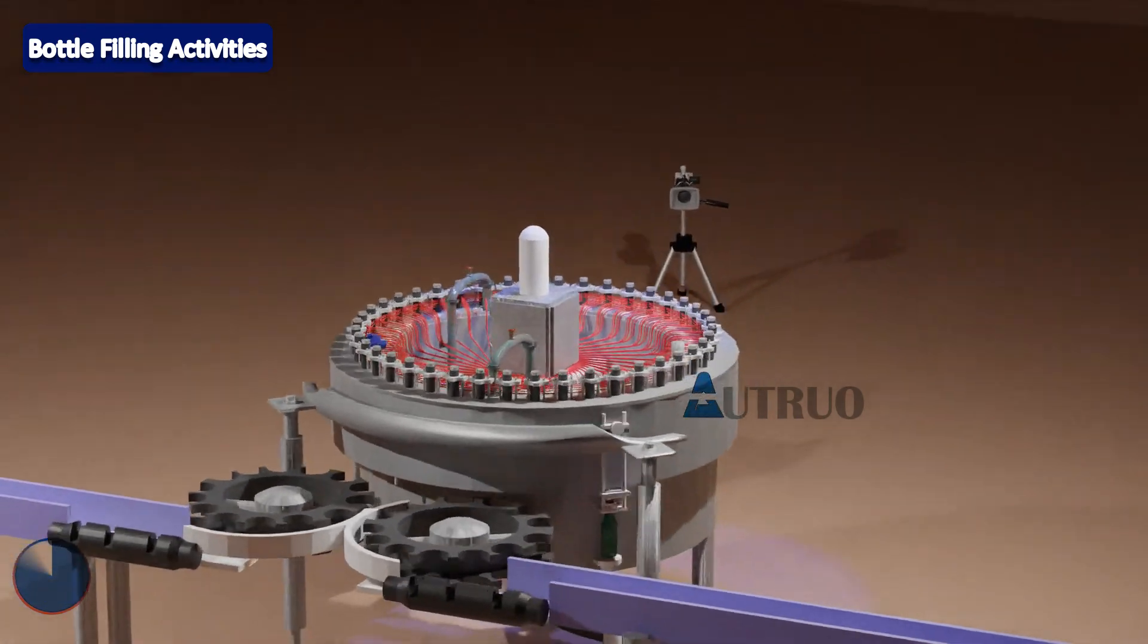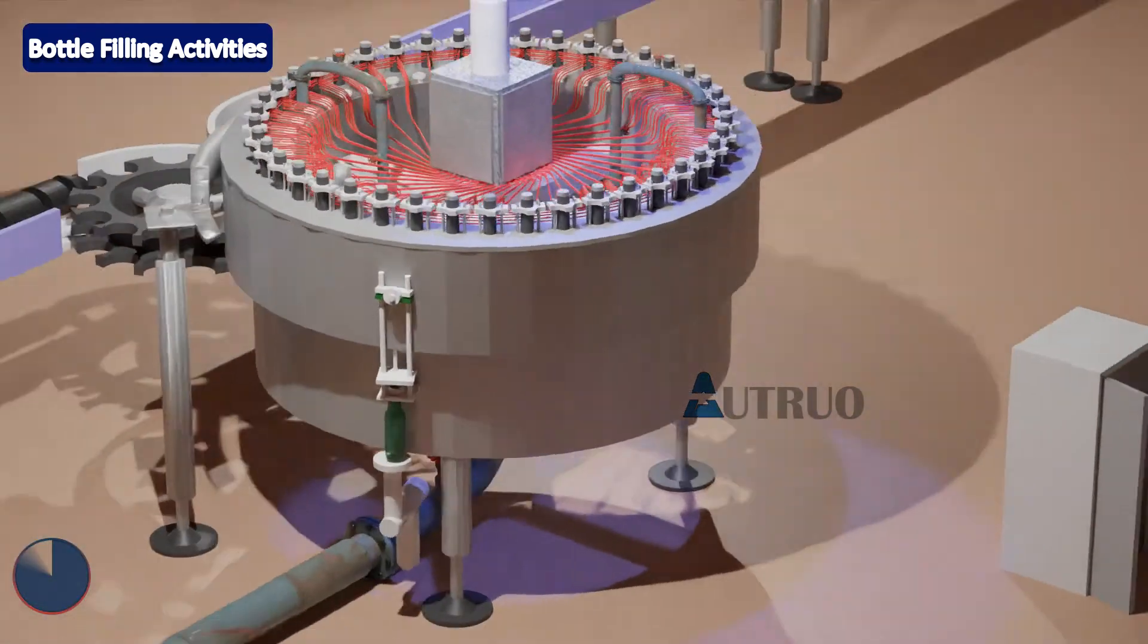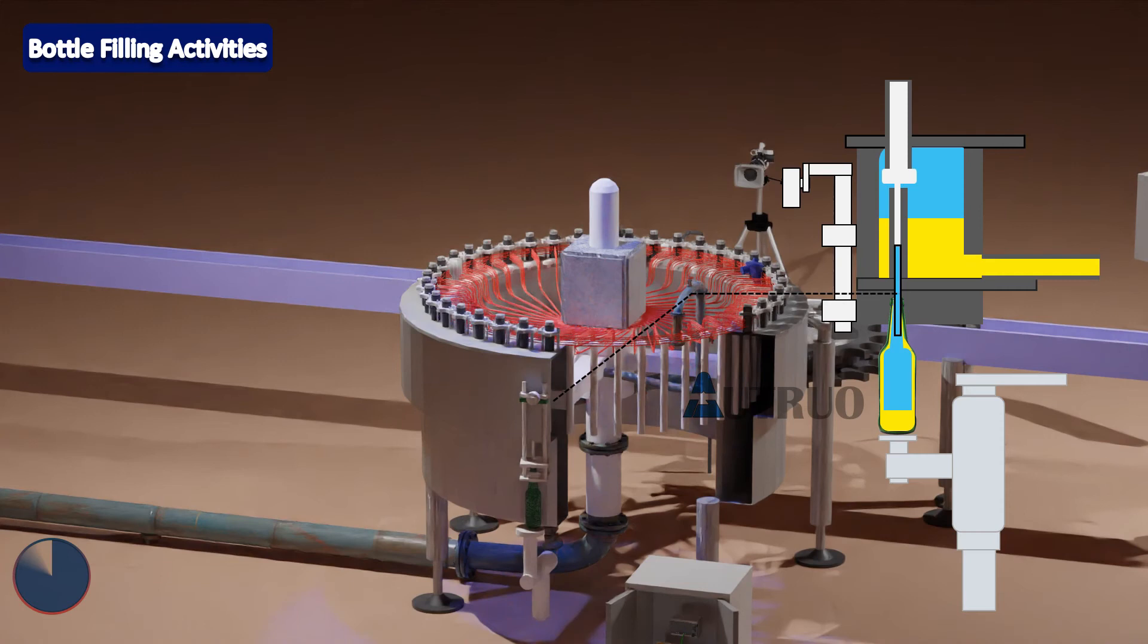Now when the filler rotates from 25 degrees to 65 degrees, the PLC will use compressed air to activate the filling valve, and the bottle will be filled with product. As the bottle fills up, it will fill to the extent that the vent tube starts taking some product in. This will trigger the filler to stop filling and as such filling will stop.